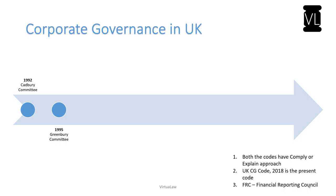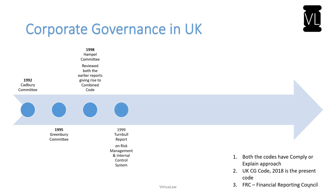In the year 1995, the Greenberry Committee was constituted and submitted its separate report setting out recommendations for the remuneration of directors, which was added to the previously existing Cadbury Committee report. In 1998, the Hampel Committee reviewed both these reports and came up with a Combined Code of Corporate Governance in the year 1999. The Turnbull Report on risk management and internal control systems was also enacted.